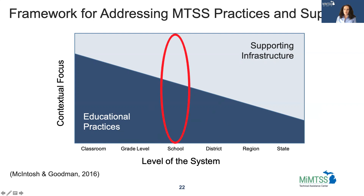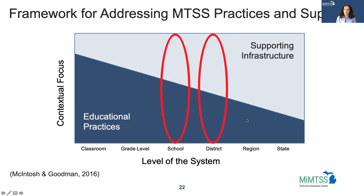You see in the graphic that the steps of the cascade are along the bottom, and as you move further from the classroom, the focus shifts more to the supporting infrastructure around MTSS as opposed to the practices themselves. If we look at the school, it's about a 50-50 split between a focus on the educational practices and the supporting infrastructure. Moving to the right, we see at the district level the focus shifts even more toward the supporting infrastructure. While the continuous improvement process itself should remain consistent across the educational cascade, and in some cases the data sources are consistent as well, the lens with which we look at that data shifts depending upon which level we're at.